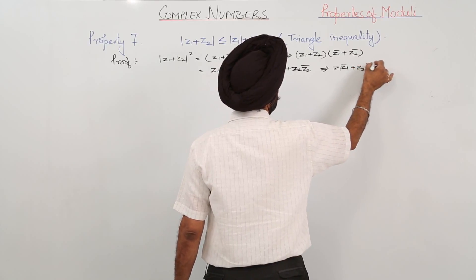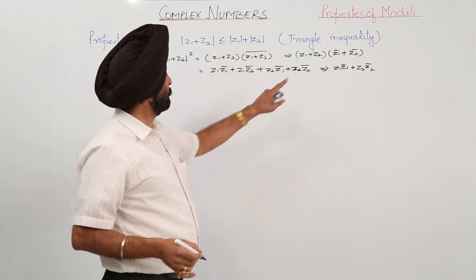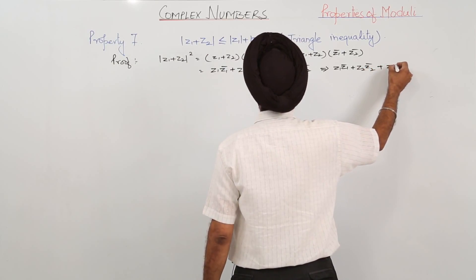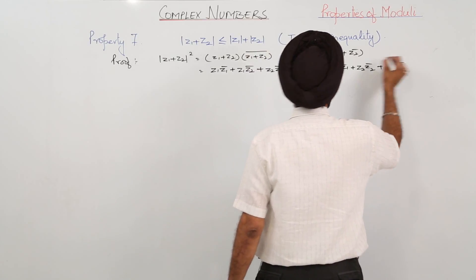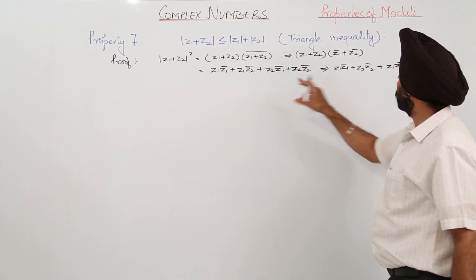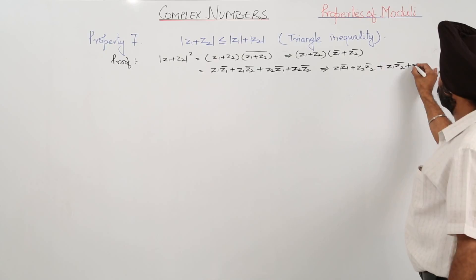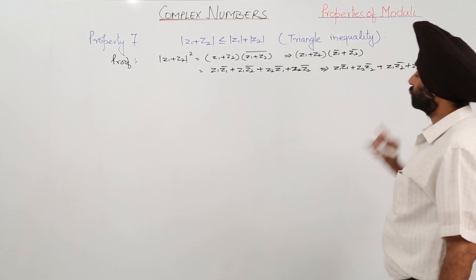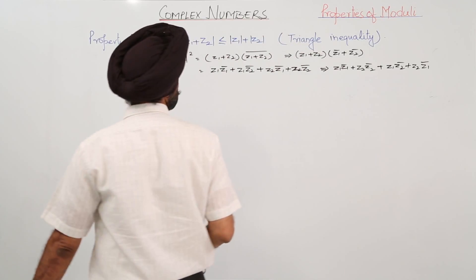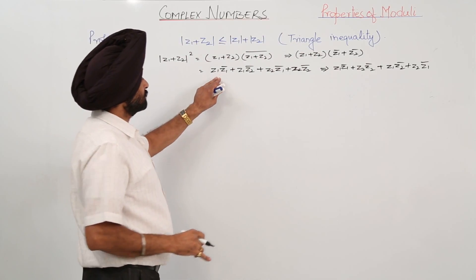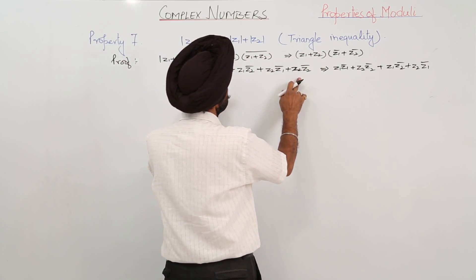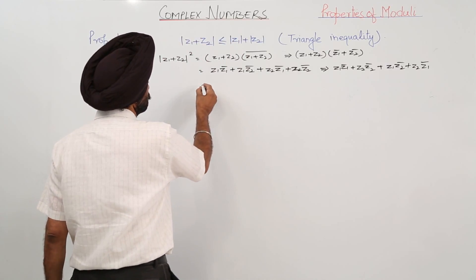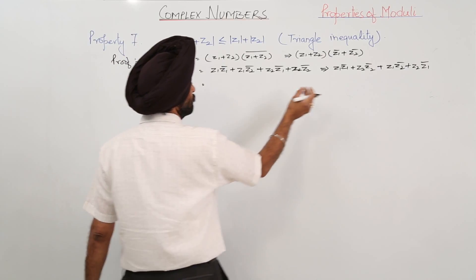Rearranging the terms: we write the first and fourth terms first — z1·conjugate(z1) and z2·conjugate(z2) — then the cross terms z1·conjugate(z2) and z2·conjugate(z1). This gives us |z1|² + |z2|² plus the cross terms.